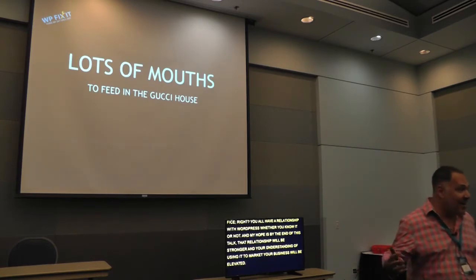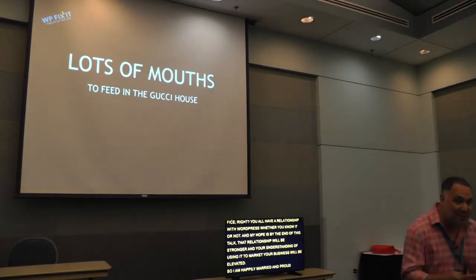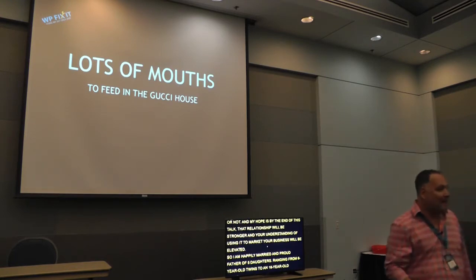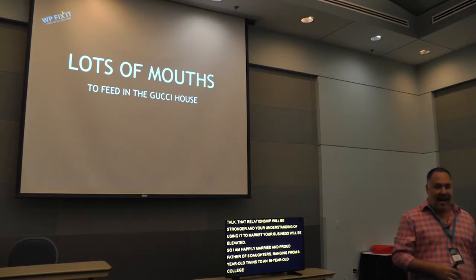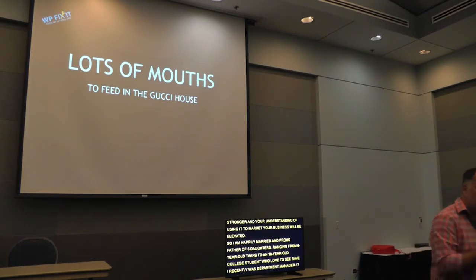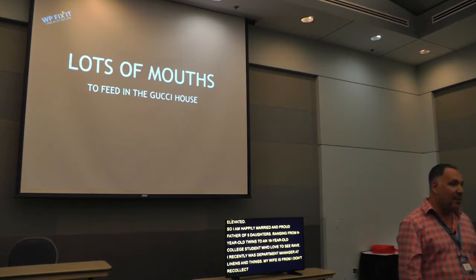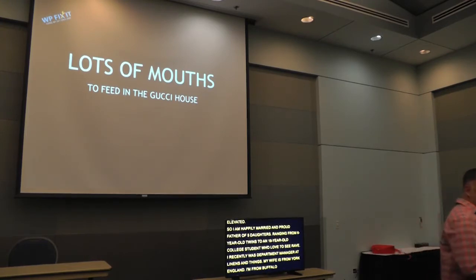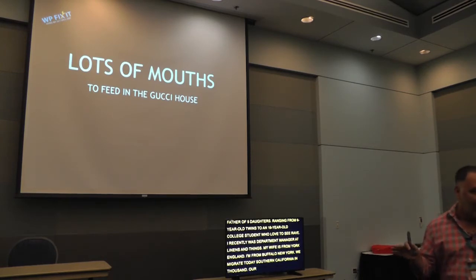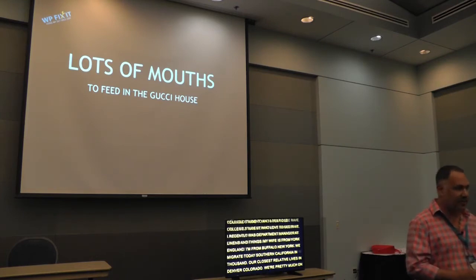I am happily married and the proud father of five daughters, ranging in age from six-year-old twins all the way up to an 18-year-old college student who loves to rave. I recently was a department manager at Linens and Things. My wife is from York, England; I'm from Buffalo, New York. We migrated to Southern California in 2000, and our closest relative lives about a thousand miles away in Denver, Colorado — so we are pretty much on our own for raising our family.